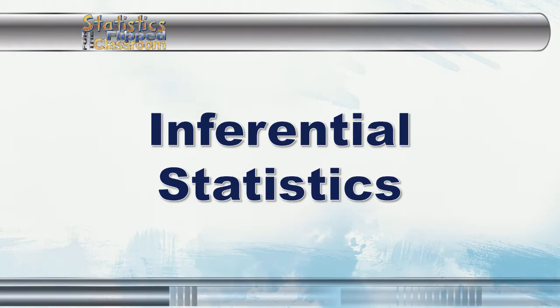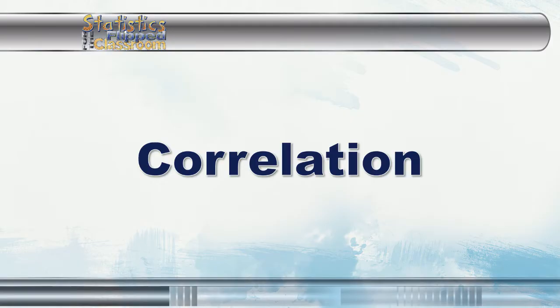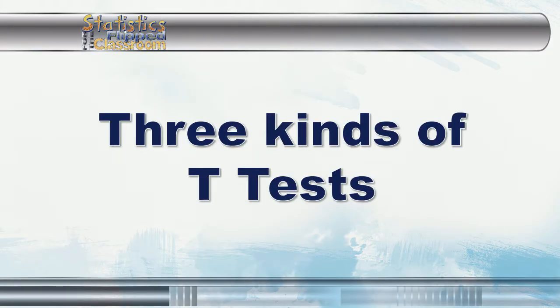You also learned a little bit about inferential statistics. You learned how to test if two variables are related using correlation, and you learned three kinds of t-tests that can tell you if two means are different. By now I'm sure you realize that there are still many things that you will need to learn about statistics and how to use SPSS.